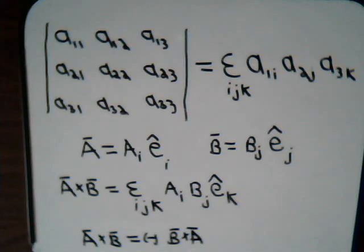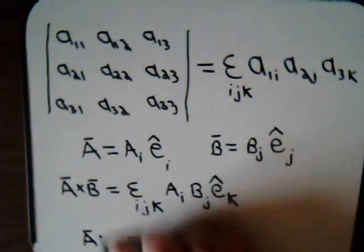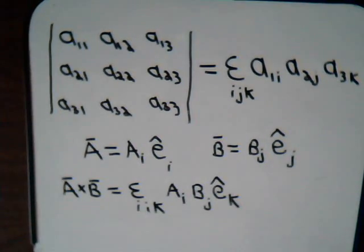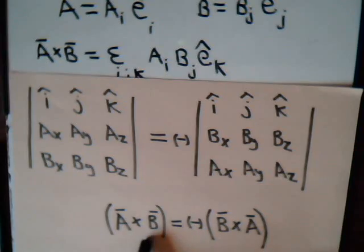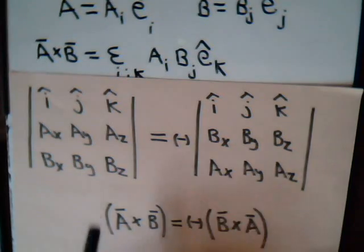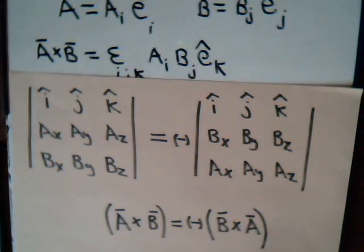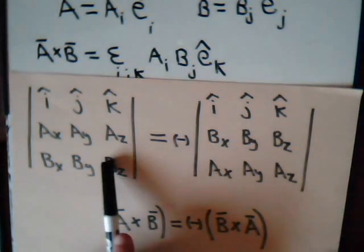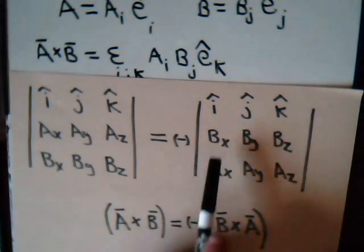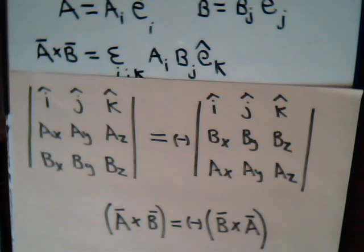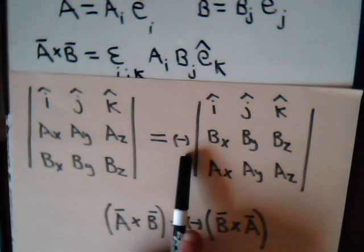We want to do that by using the properties of the epsilon permutation symbol. Now, you're probably used to thinking of it in these terms, that A×B would be expressed as this determinant, and B×A would be expressed as this determinant. But to go from here to here, what that means is that we interchange the B row with the A row. And when you do that, that gives us a negative sign.